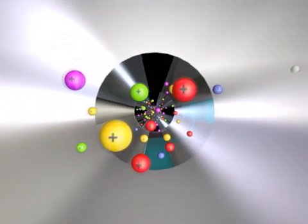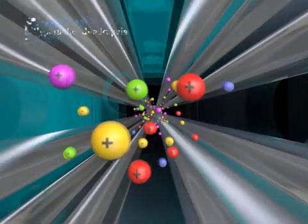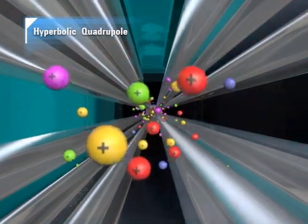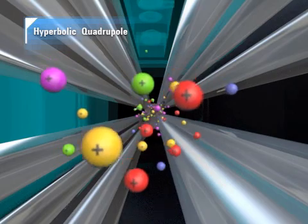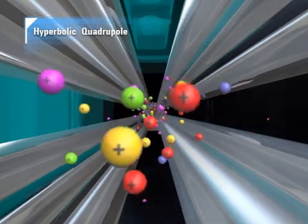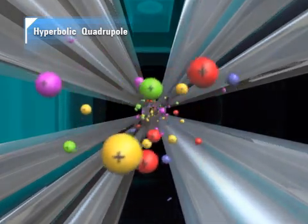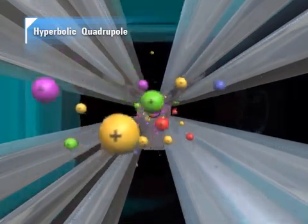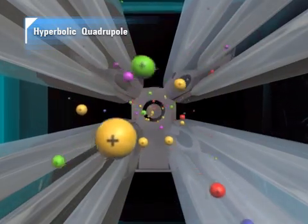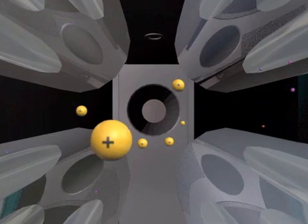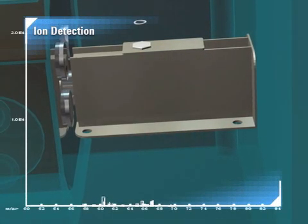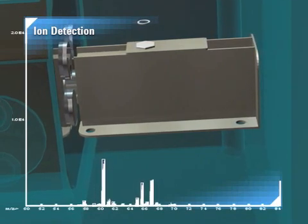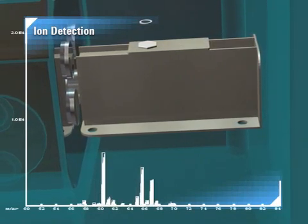The analyte ions leaving the ORS cell enter the quadrupole mass filter and are separated based on their mass-to-charge ratio. Only the target ion is stable and passes along the axis of the quadrupole. The quadrupole scans rapidly across the mass range and passes each mass of interest sequentially to the electron multiplier detector. Ions strike the detector and the resulting electronic signals are processed and stored in a multichannel scaler, creating a mass spectrum where intensity at a given mass is proportional to concentration of the isotope at that mass.